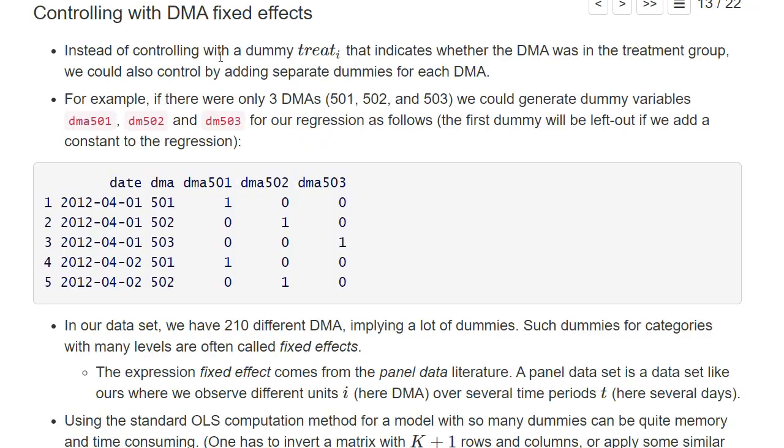Alternatively, we could control by so-called DMA fixed effects. This would mean that we would add a separate dummy variable for each DMA. For example, assume we would have only three different DMAs in our data set: 501, 502, and 503 would be the codes of these DMAs. Then we would generate three dummy variables: dma501, dma502, and dma503, and add them as columns to our data set.